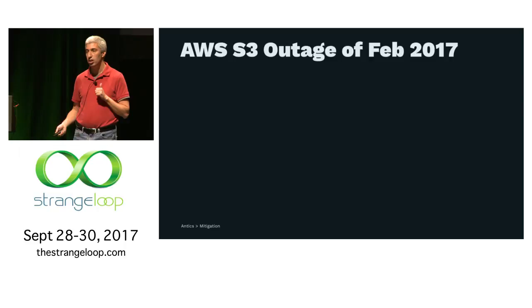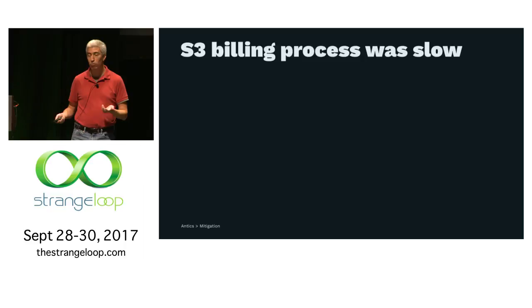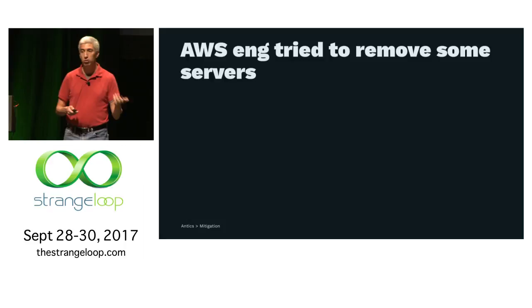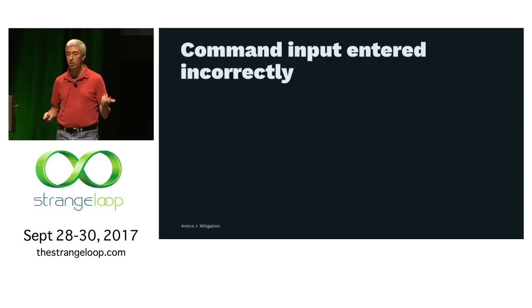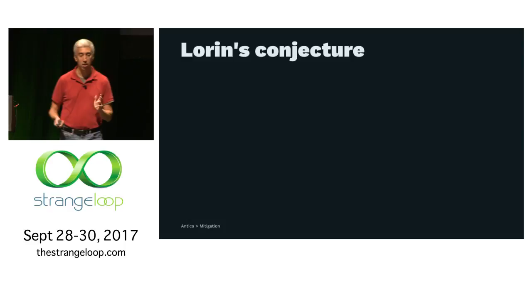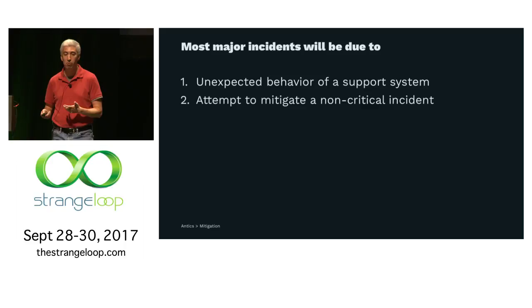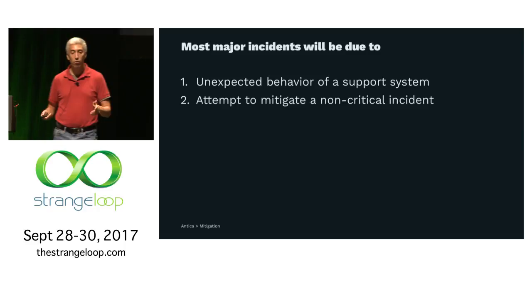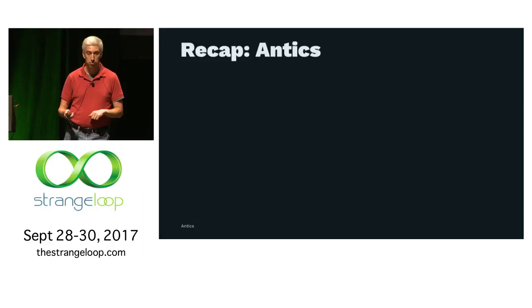Let's talk about mitigation. There was another Amazon outage in S3 a few months ago. According to their published postmortem, their billing process was slow, and they were trying to debug this. An engineer was trying to take some servers offline to help debug the problem, entered a command incorrectly, took too many servers offline, and S3 had a problem. My conjecture is that once your system gets large enough and you've solved the simple problems, all your incidents are going to be because some support system behaves in a weird way, or you're trying to fix some minor issue and in doing so make the problem worse.